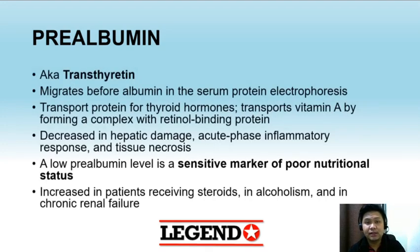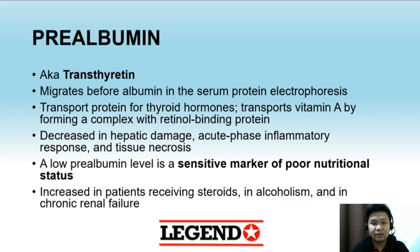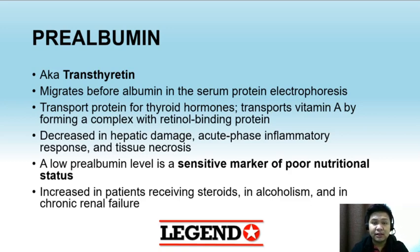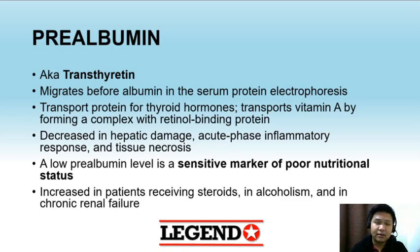First is prealbumin. Prealbumin is also known as transthyretin. Prealbumin migrates before albumin in serum protein electrophoresis. It is a transport protein for thyroid hormones, and it transports vitamin A by forming a complex with retinol binding protein. A low prealbumin level is a sensitive marker of poor nutritional status, which is the main reason why prealbumin is measured in the laboratory.